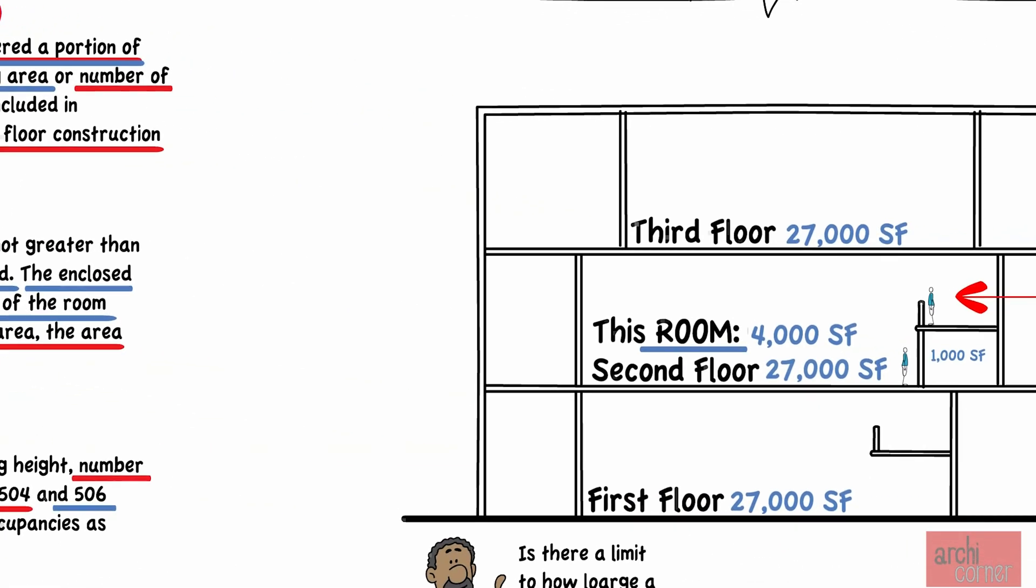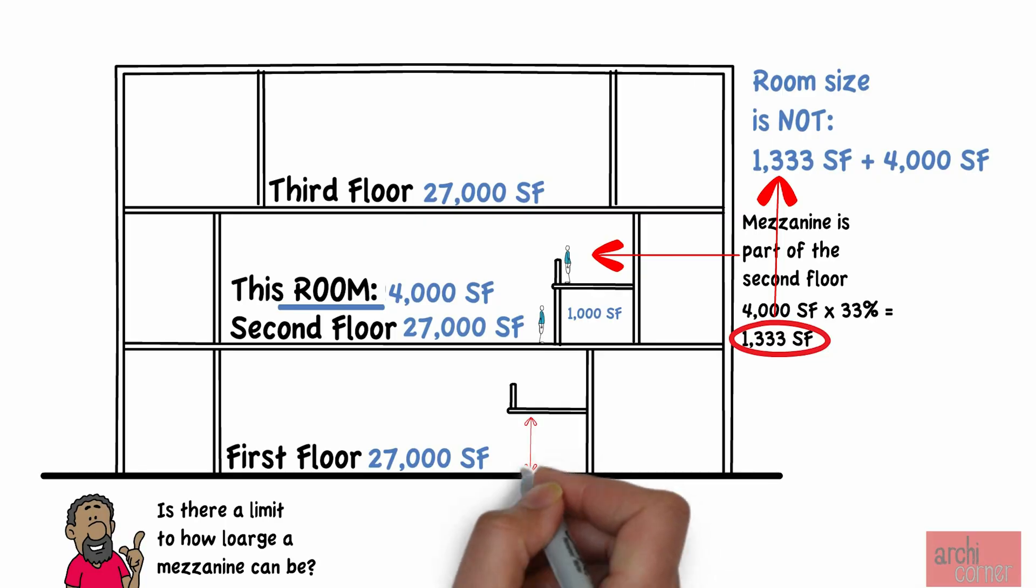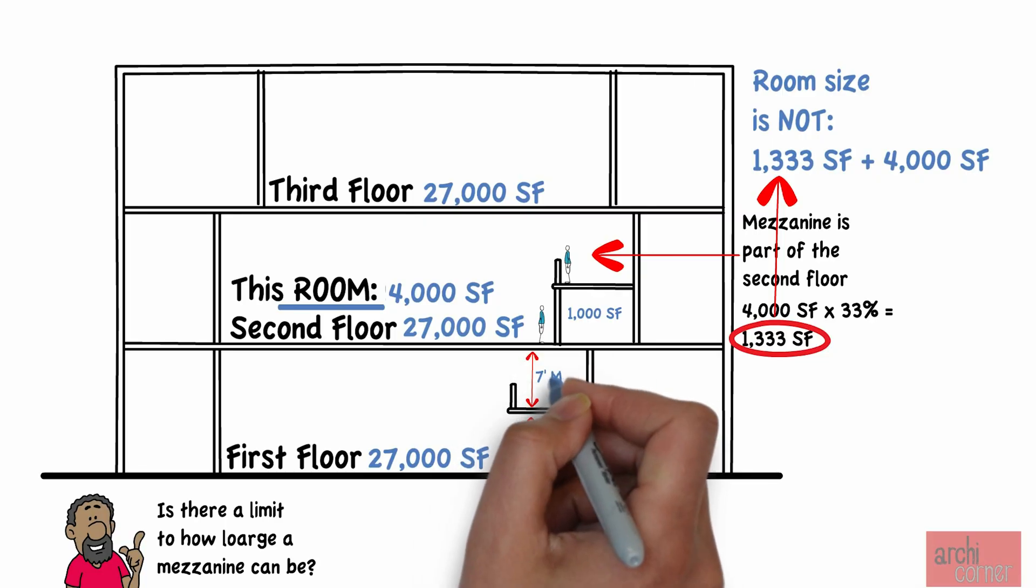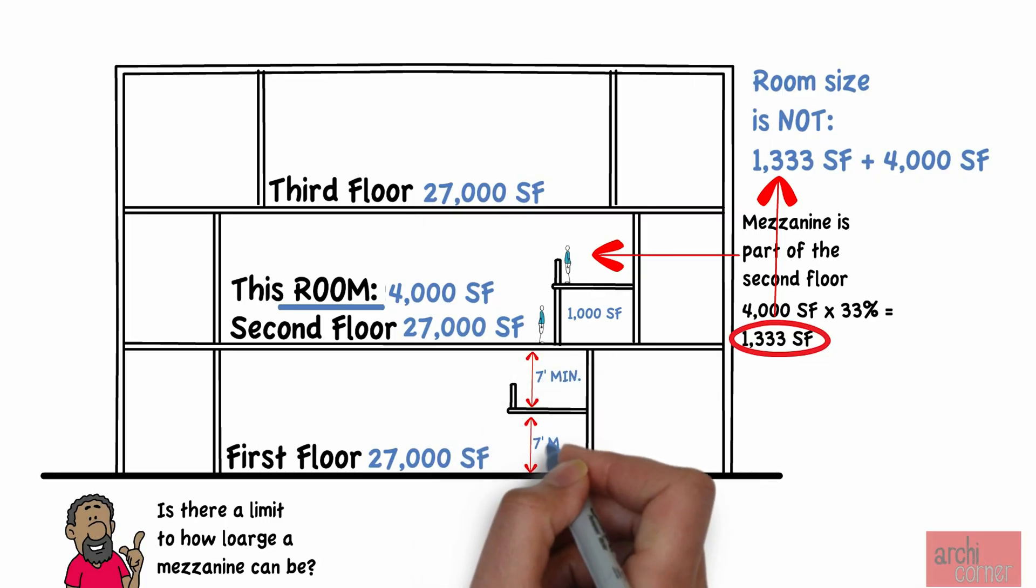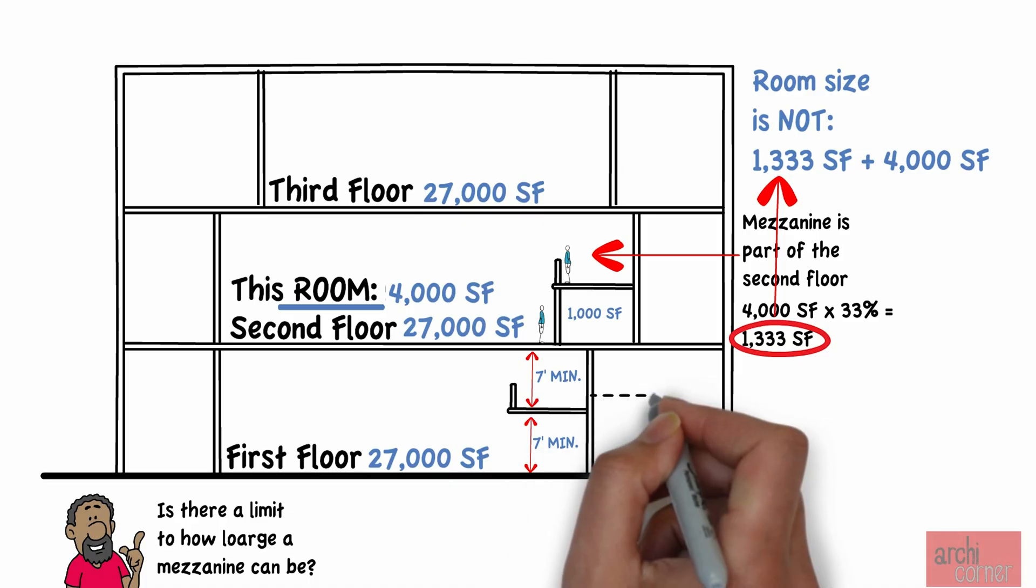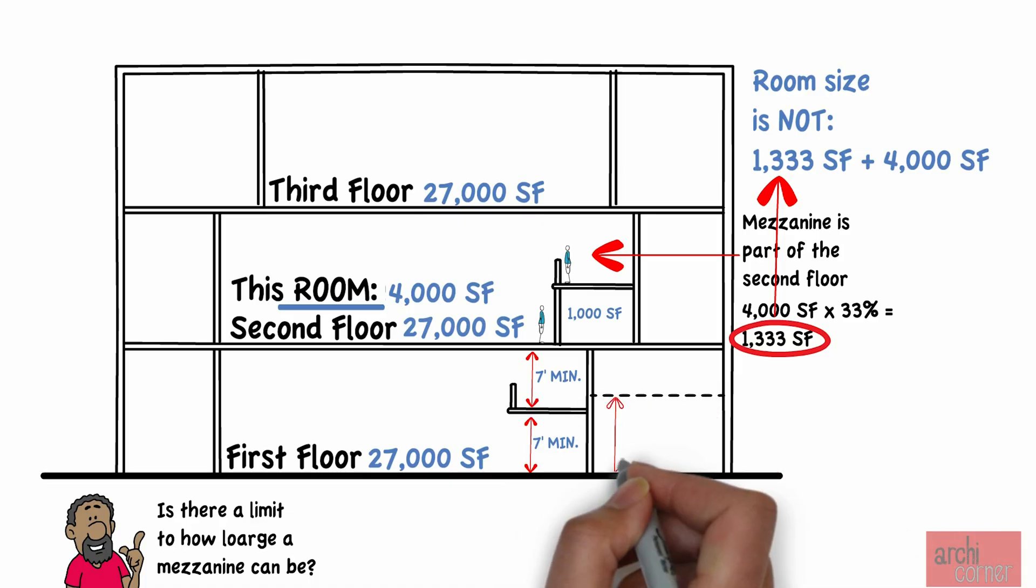So going back to our example, if we had a mezzanine, the ceiling heights would be required to be seven feet minimum. However, the office next door, if it had a T-bar drop-down ceiling, it would need to be a minimum of seven foot six because it is not a mezzanine. So that is another difference between a mezzanine and story requirements.